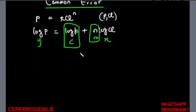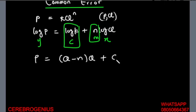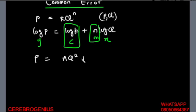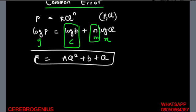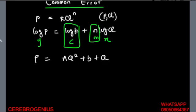Now let's take an instance where instead of that, we have p equal to aq squared plus b plus q. This is a different form. I want to linearize this — but there is a mistake that some people are going to make here.